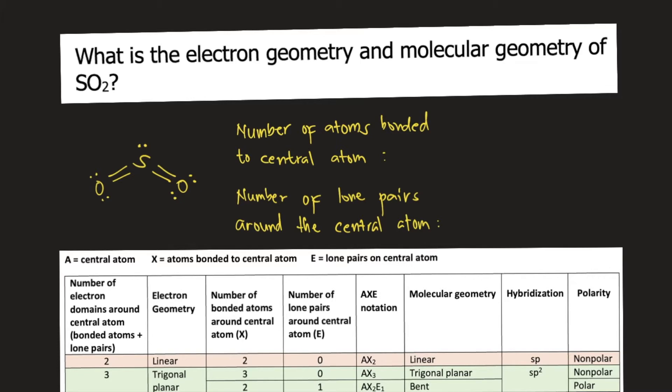In order to determine the electron geometry and molecular geometry of a molecule, you need to count two things. One is the number of atoms bonded to the central atom, and the other one is the number of lone pairs around the central atom.